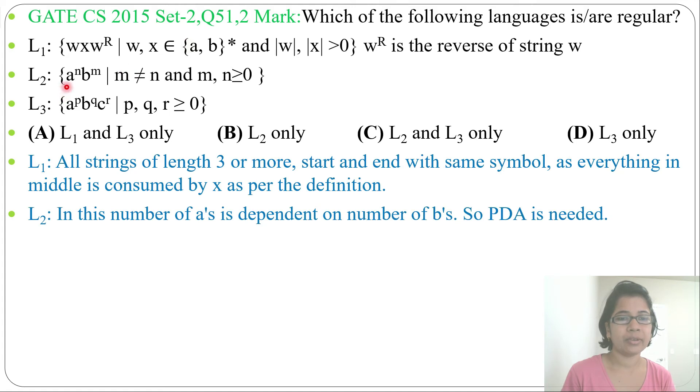Next, L2: here you need to compare number of a's with number of b's, and m is not equal to n, so number of a's is not equal to number of b's. For this also you need to compare, and comparison you cannot do in regular language. For this we need PDA. This cannot be designed in DFA; for this we need PDA. That's why this is not regular, it is context-free.